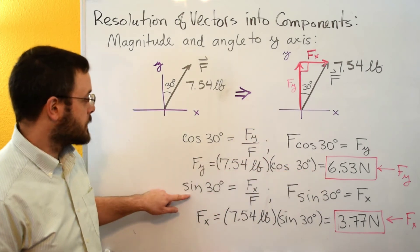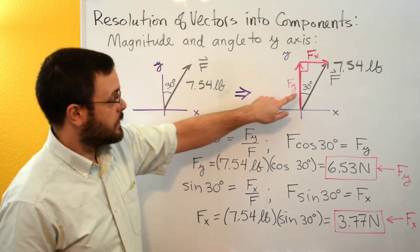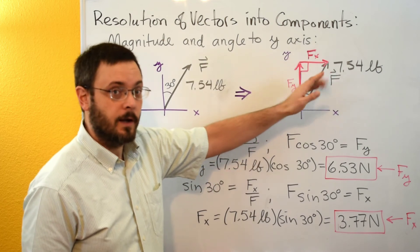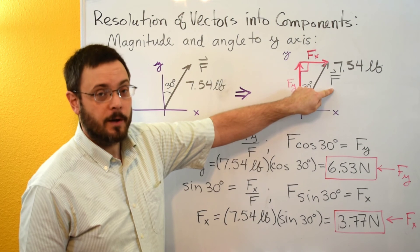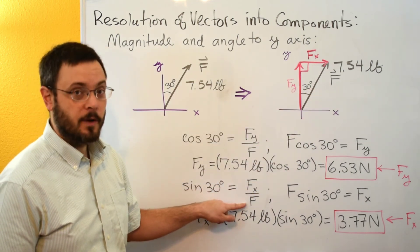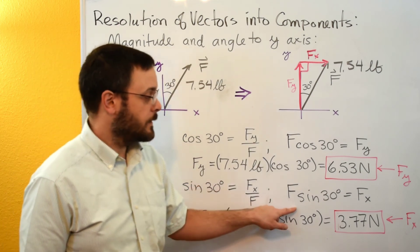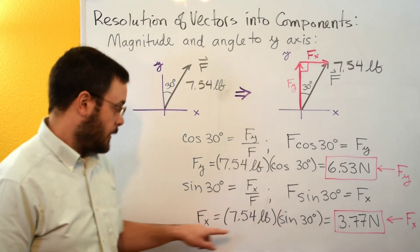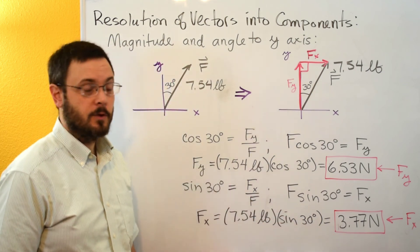Let's look at what sine would give us. For sine of 30 degrees it's going to be the side that's opposite to the angle, the side that's spanned by the angle. So that's going to be our fx side divided by our hypotenuse which is f. So sine of 30 is fx divided by f. We can multiply this equation through by f and we'll get that f sine of 30 degrees is equal to fx and we can plug in our numbers here and we'll get that fx is 3.77 Newtons.